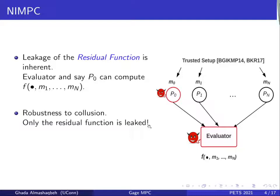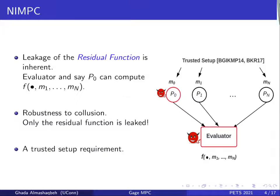Existing works showed how to construct NIMPC protocols that are robust to collusion, to guarantee that the only thing that will be leaked is the residual function. And as I just said, all these protocols require a trusted setup to generate correlated randomness for the players.